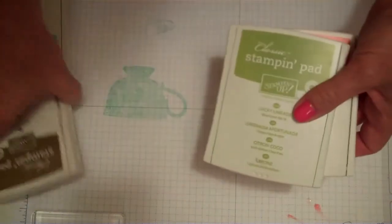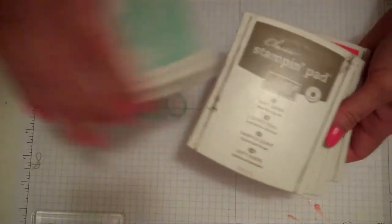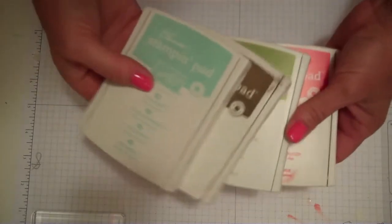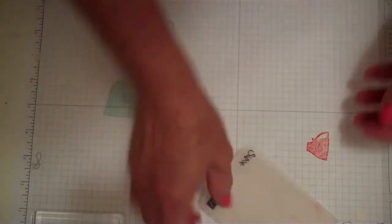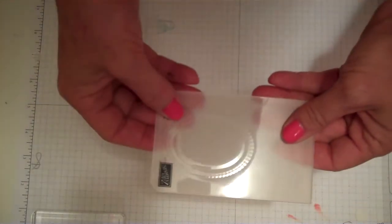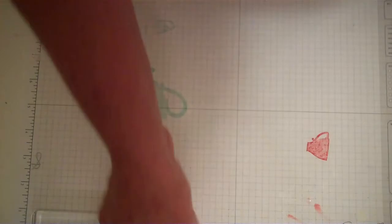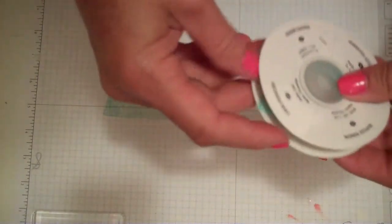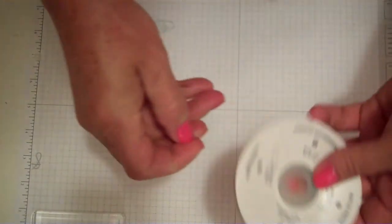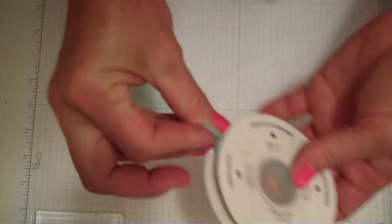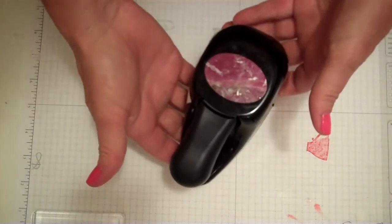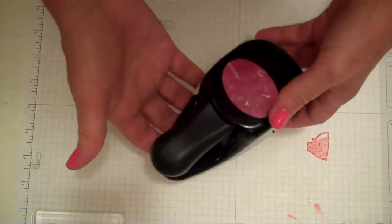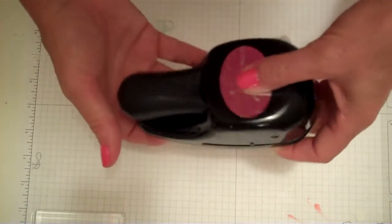For stamp pads, the colors I used were poppy parade, lucky lemonade, soft suede, and pool party. Then I'm also going to use this embossing folder, the oval embossing folder, and then I have this really cute ribbon that matches the pool party. It's a ruffled ribbon that's also in the catalog. I'm going to use this extra large oval punch.